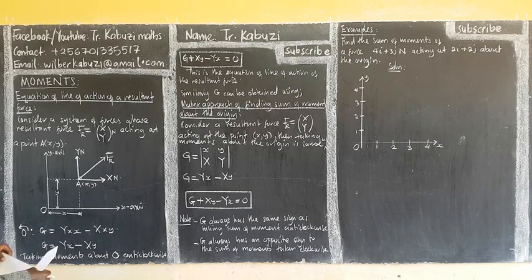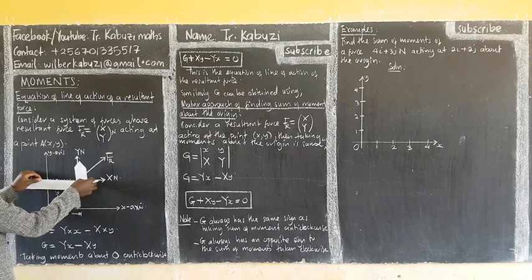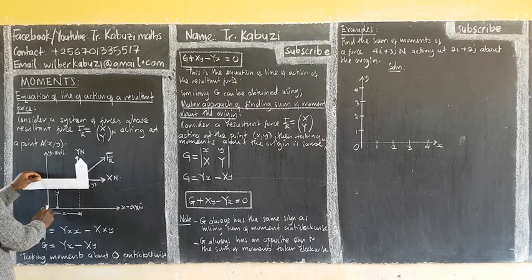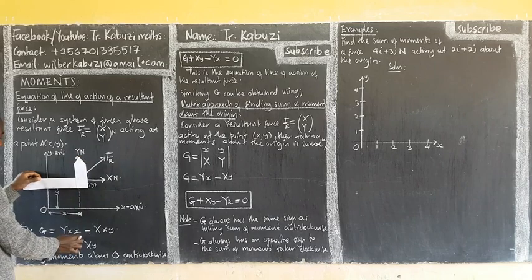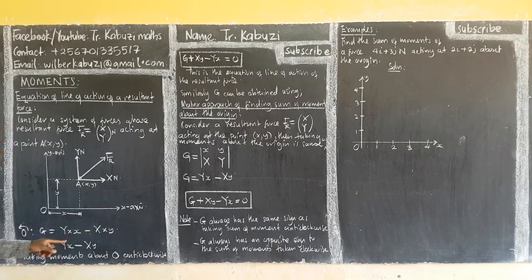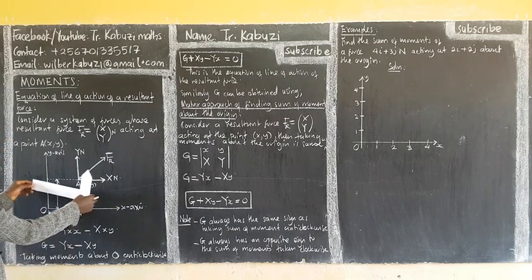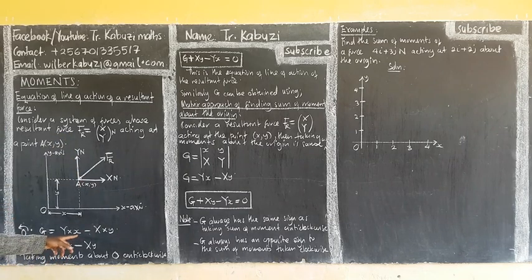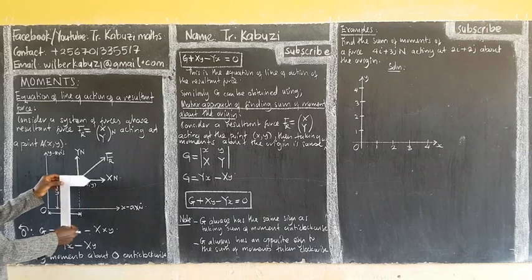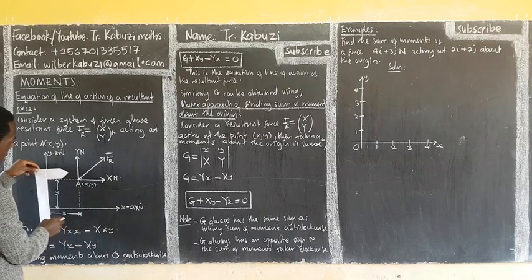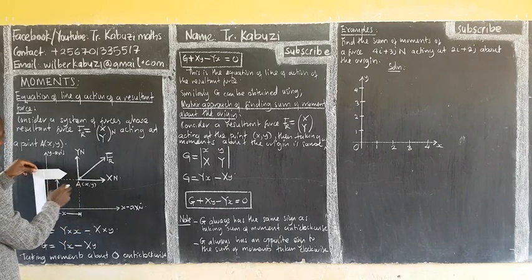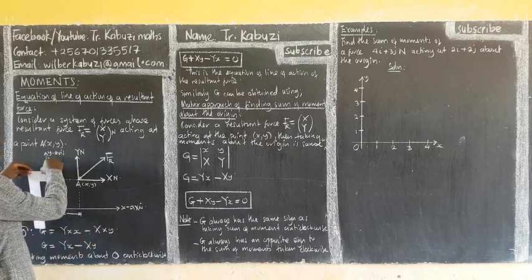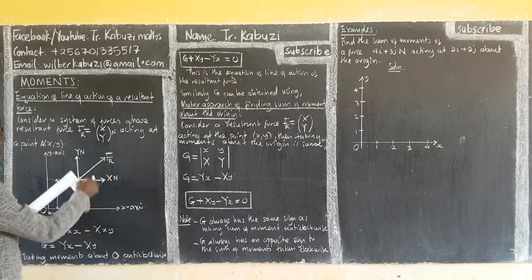Coming back to the first slide, you can see this is how it is acting. The perpendicular distance from the point where we take moments to the force line is x. That is why you get the force multiplied by perpendicular distance x. For the y-force, the perpendicular distance is y.